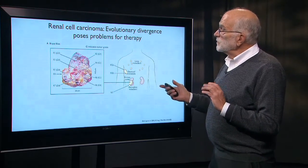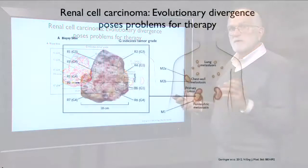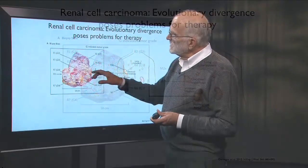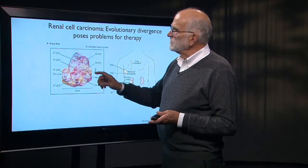Now here is a case of renal carcinoma. And I'm going to go through two or three slides of this because this was quite well analyzed and it shows how evolutionary divergence poses some real problems for therapy. Here is a picture of that renal carcinoma, and you can see that it contains a lot of subclones.